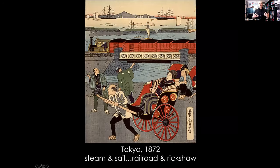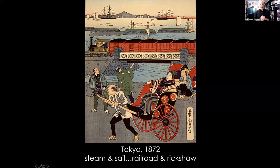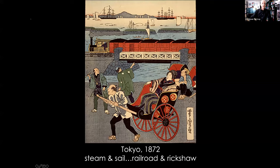But technologies also coexist with one another in really fascinating ways. My colleague from the history department, Kate McDonald, shared this image with me — it's a picture from 19th century Japan that shows a world where steam and sail and railroads and rickshaws are all sharing common space. Industrial revolutions were distributed unequally in space and time. The technological world wasn't flat. And today, of course, we are still living in this lumpy, bumpy world as technologies accumulate on top of each other.